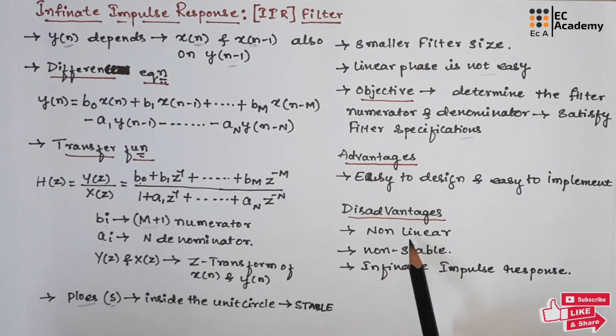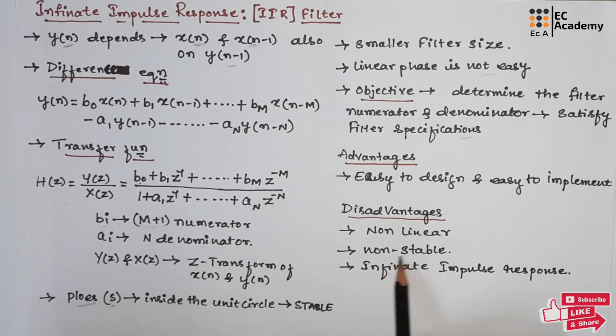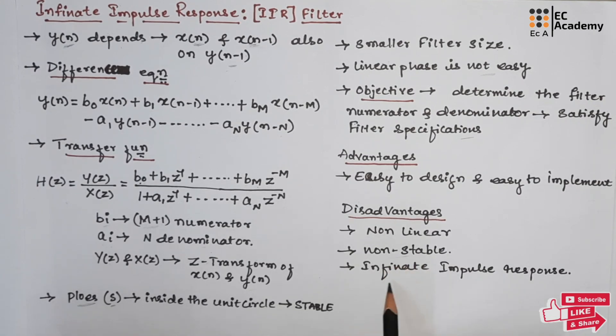The major disadvantage is it is very difficult to design the linear operation in IIR filter. Sometimes IIR filter will be non-stable or unstable, and since IIR filter is having infinite impulse responses, it will be having large number of coefficients. These are the disadvantages of IIR filter.